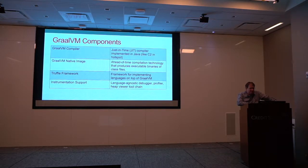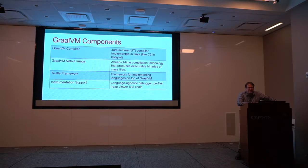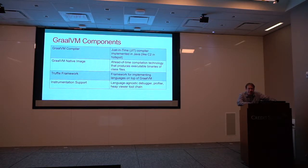The GraalVM components: the GraalVM compiler is a just-in-time compiler implemented in Java — not in native code like the Java C2 compiler, which makes it much easier to work with. The native image component does ahead-of-time compilation to produce a binary image. The Truffle framework allows you to implement additional languages on top of GraalVM. Goldman Sachs reportedly ported one of their internal languages to run on GraalVM in two weeks. This enables domain-specific languages like COBOL or MUMPS to run on GraalVM with significant performance benefits.